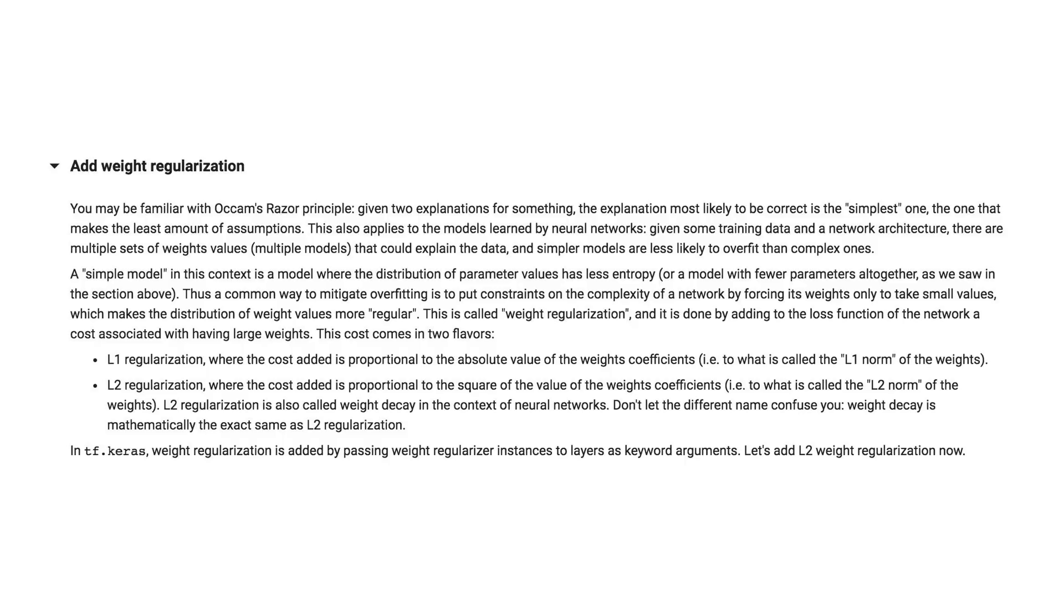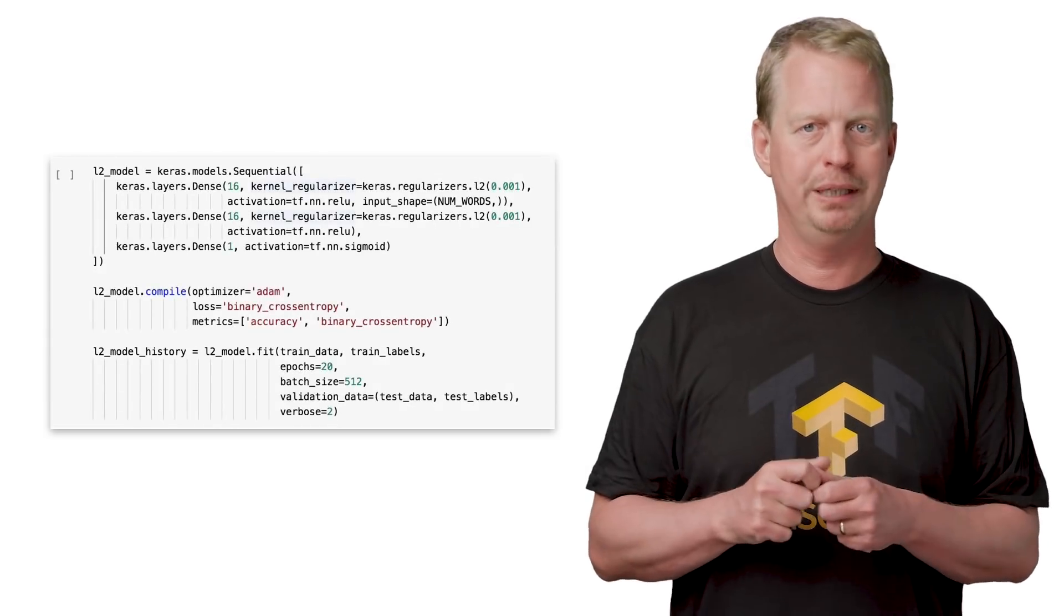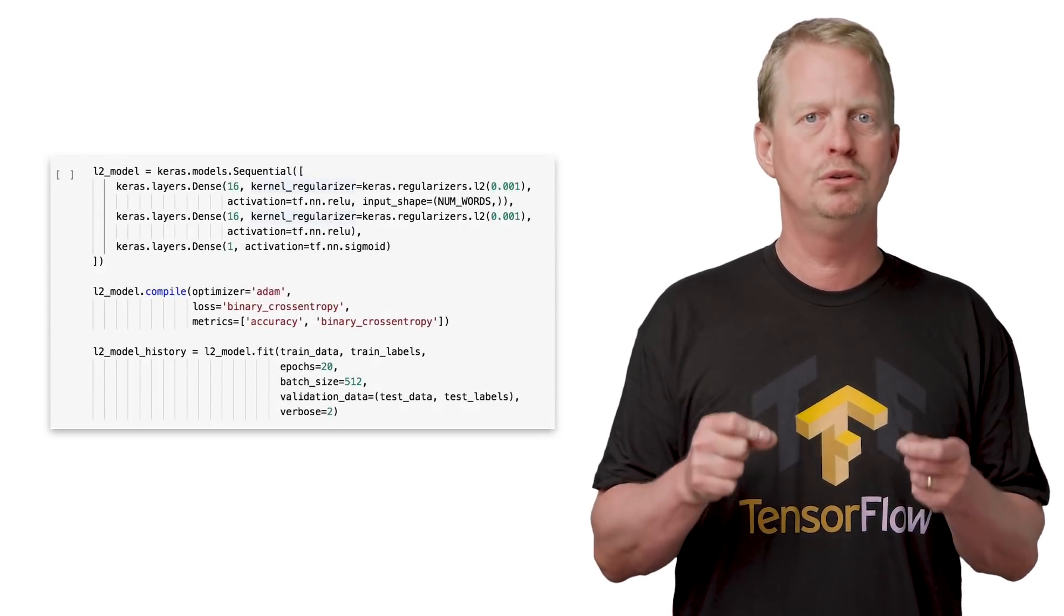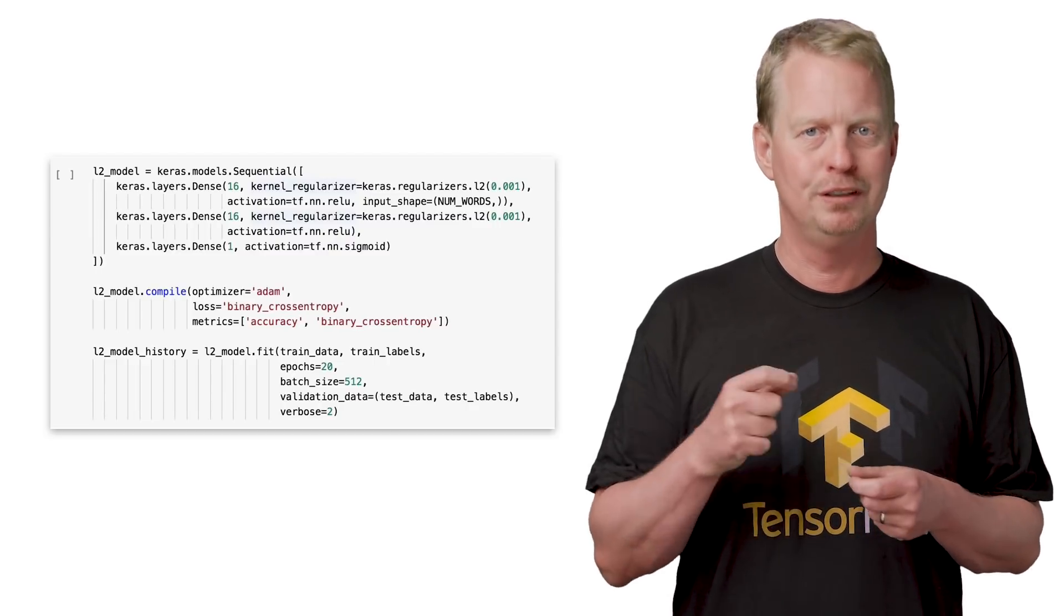This disables our model to learn specialized things about our training data. Doing this is very straightforward in TensorFlow. Simply use the kernel_regularizer parameter when defining the model.